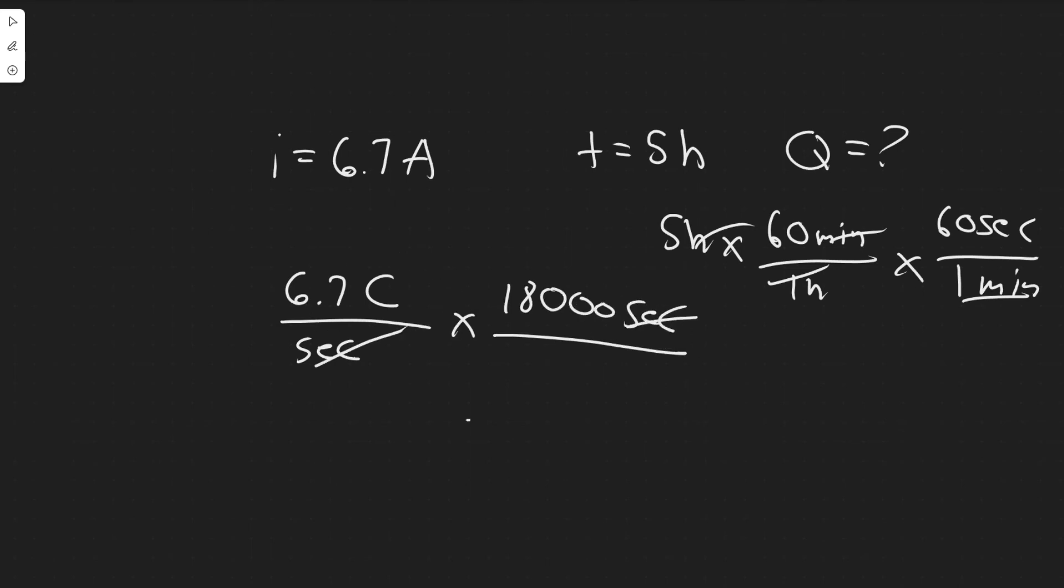So 6.7 times 18,000 is 120,600. This is in Coulombs, so you can just write it however you want. This is going to be the charge that passes through the battery. So this right here is going to be your answer, and hopefully you found this useful.